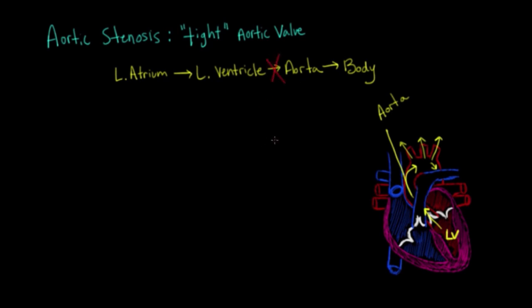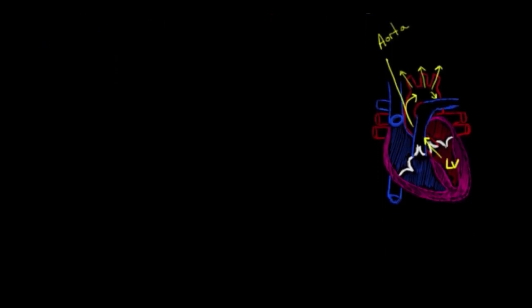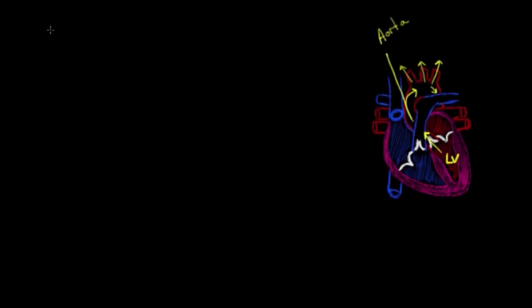Now, if it can't get from the left ventricle to the aorta, due to something such as aortic stenosis, then you're going to have blood backed up in the left ventricle, and you're going to have problems perfusing or supplying enough blood and enough oxygen to the rest of the body's tissues.